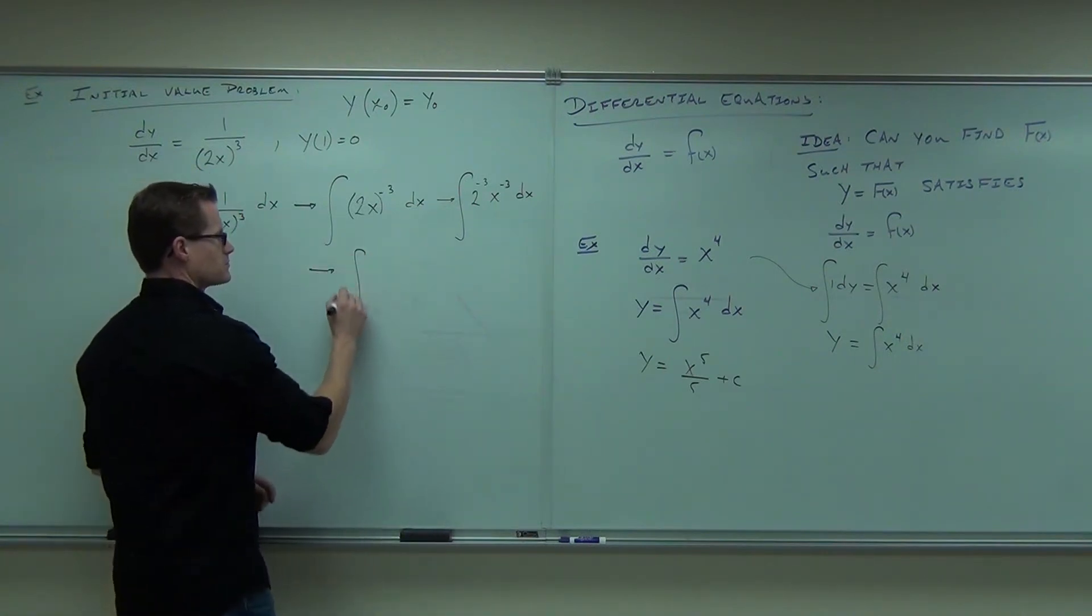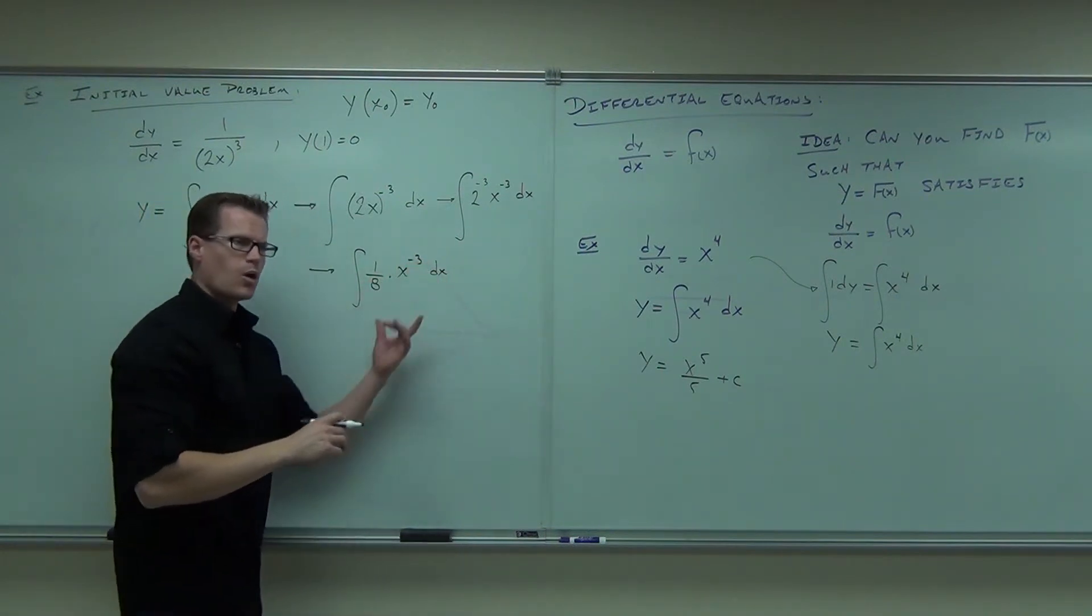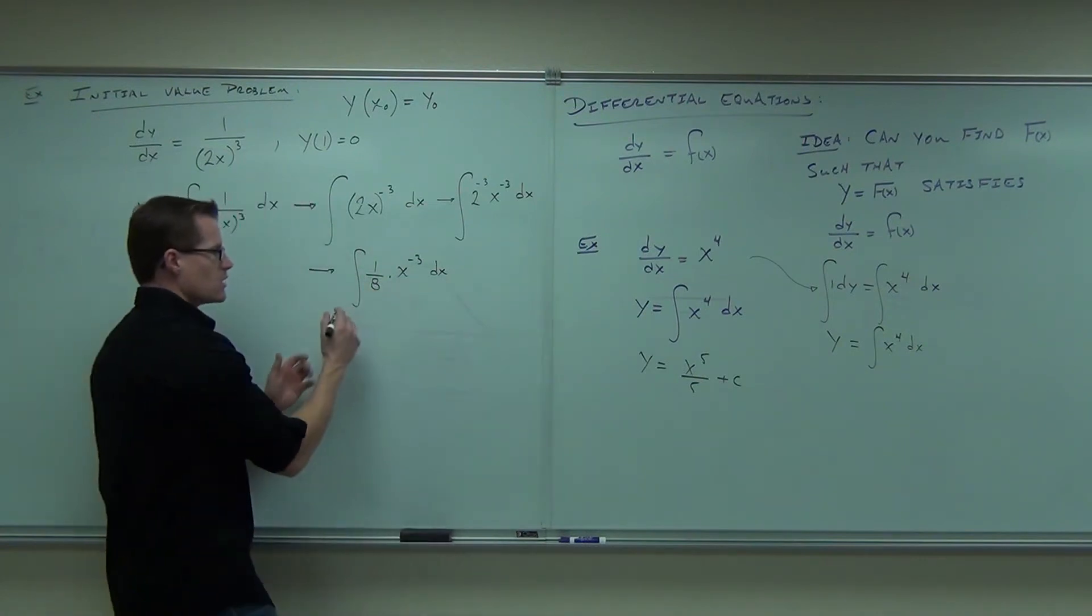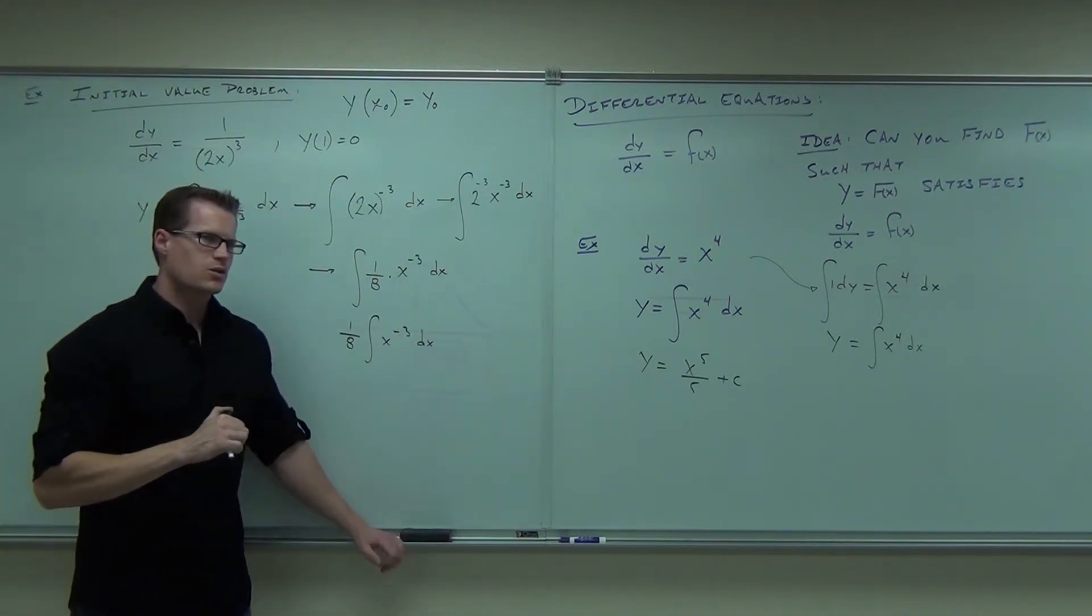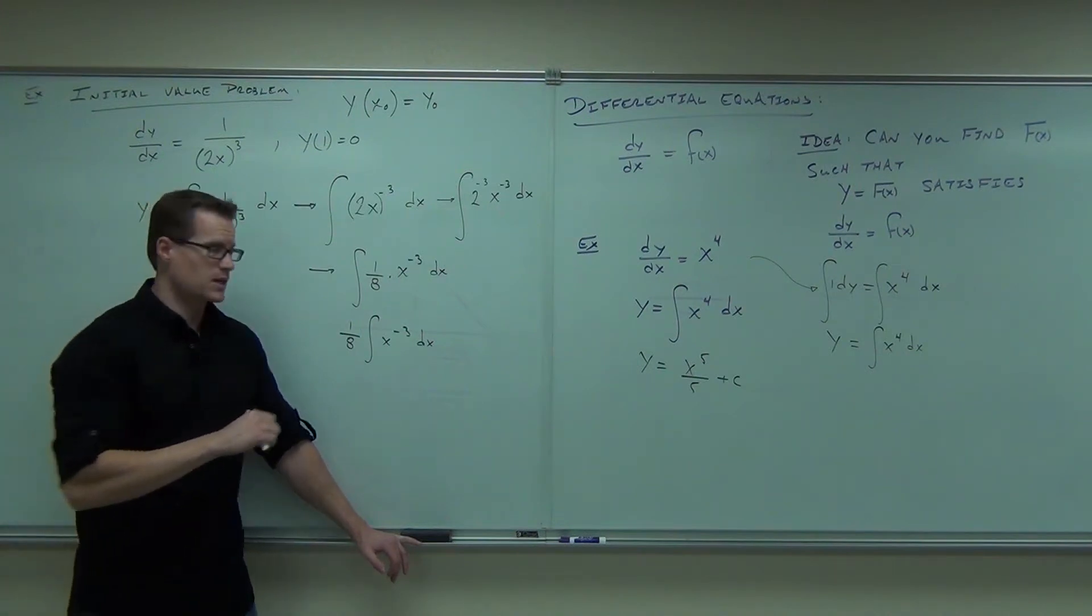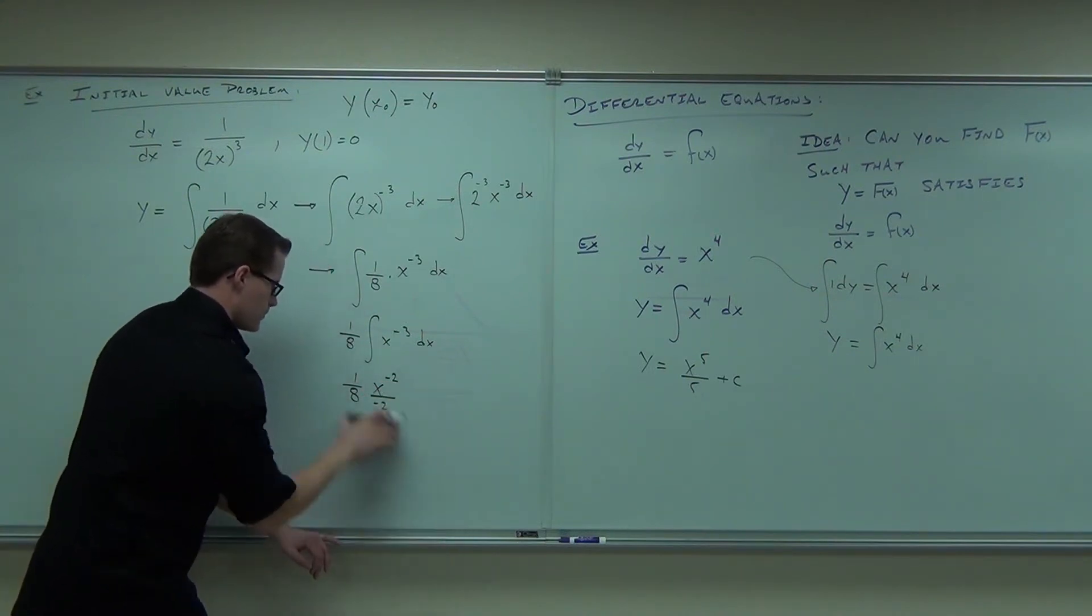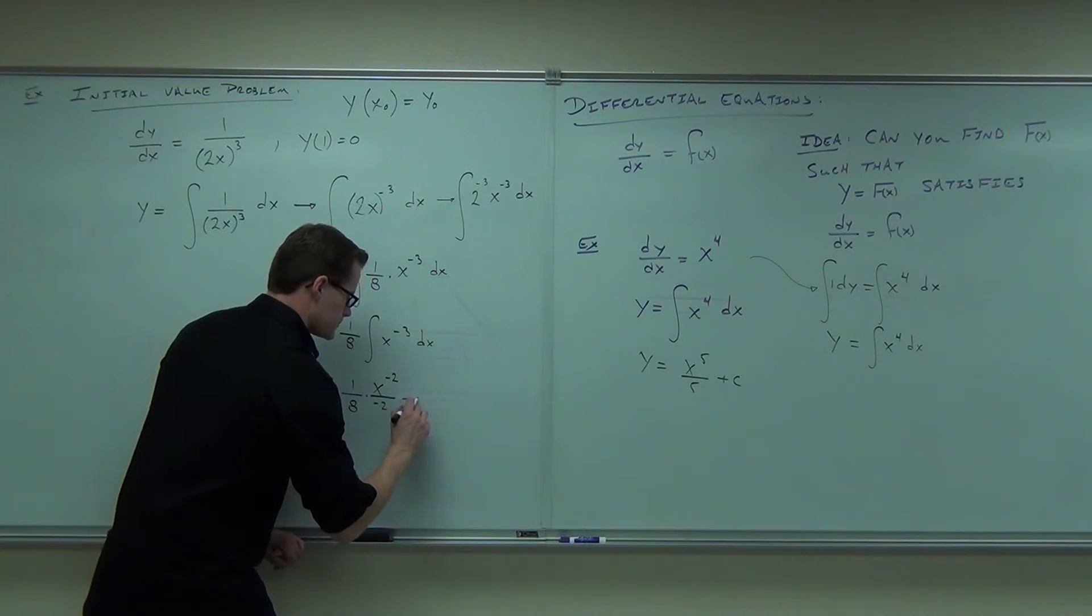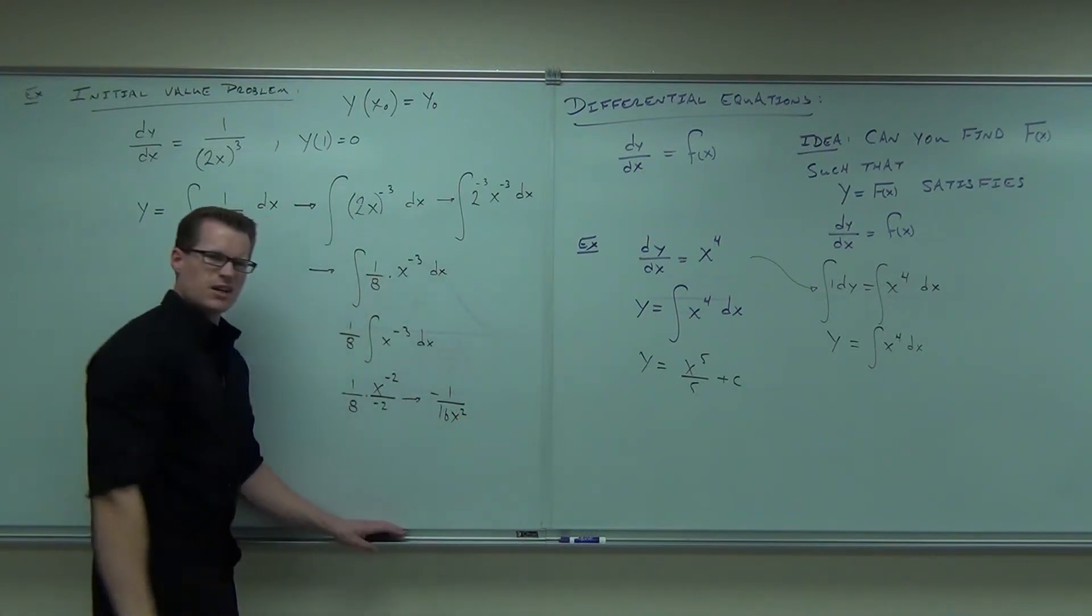You get 1 eighth x to the negative 3. That one you have to leave because that does fit your table. What can you do with the 1 eighth? Probably a good idea to do, right? We don't want to mess around with fractions too much because we create more fractions. It's easier if I write this as 1 eighth x to the negative 3 dx. What is the integral of x to the negative 3 dx? Can you tell me? x to the negative 2. Negative 2. Good. Well, that is negative 1 over 16 x squared.